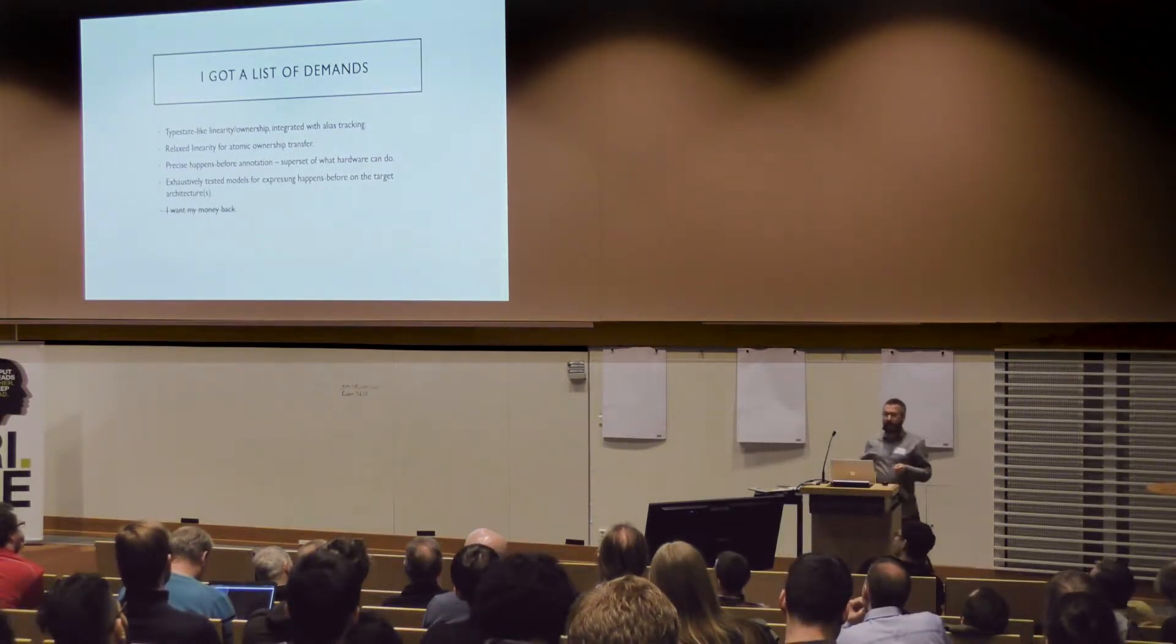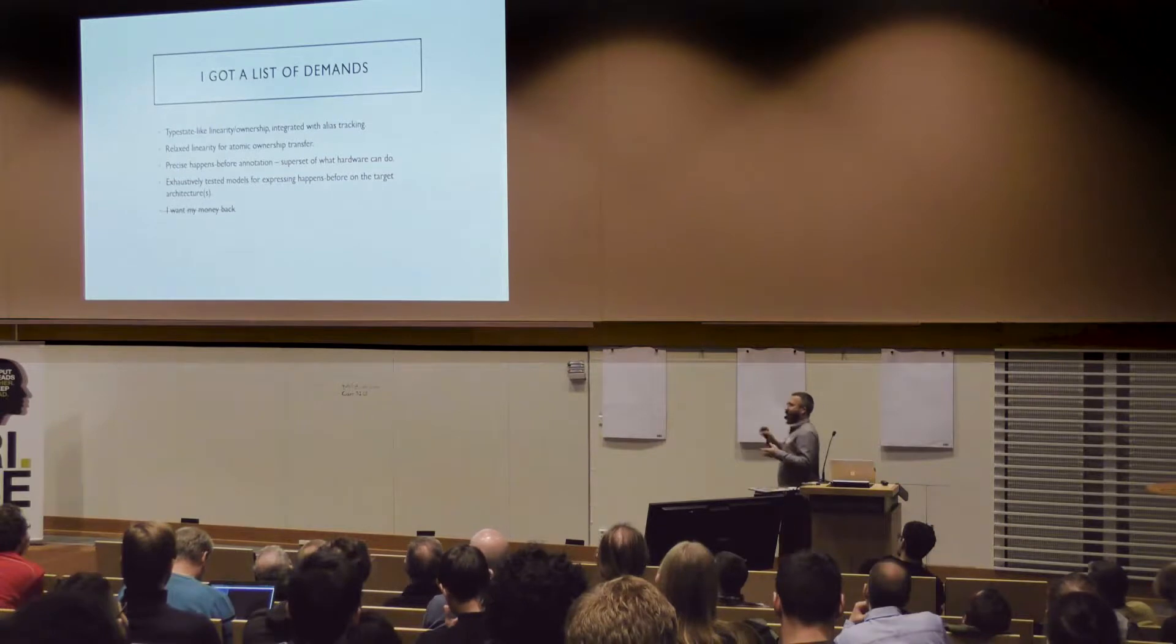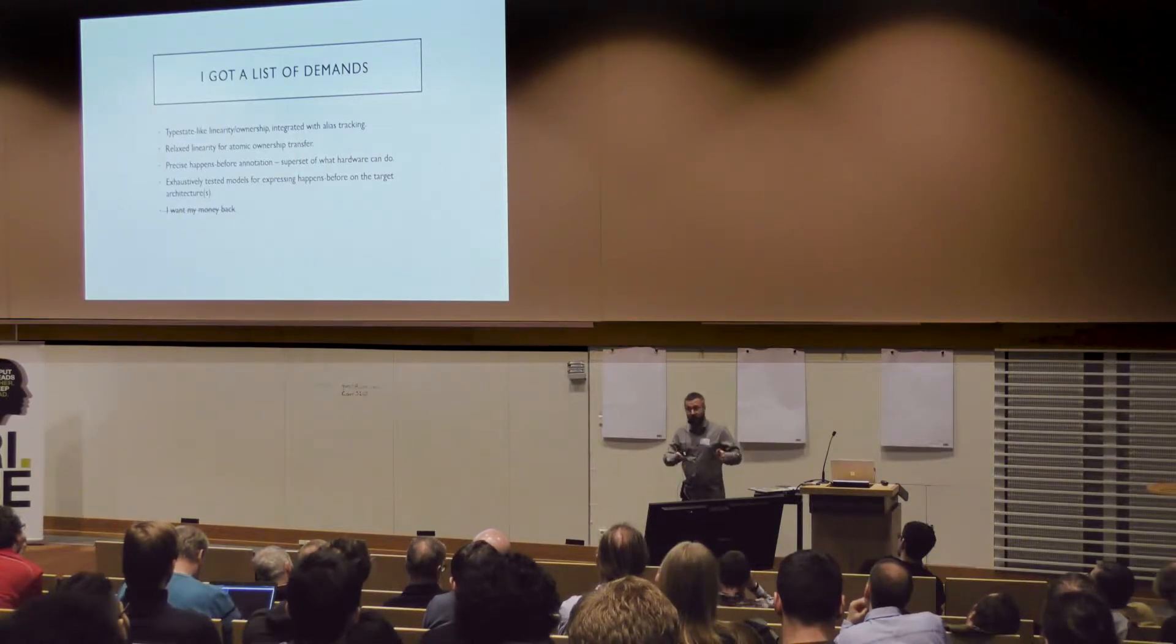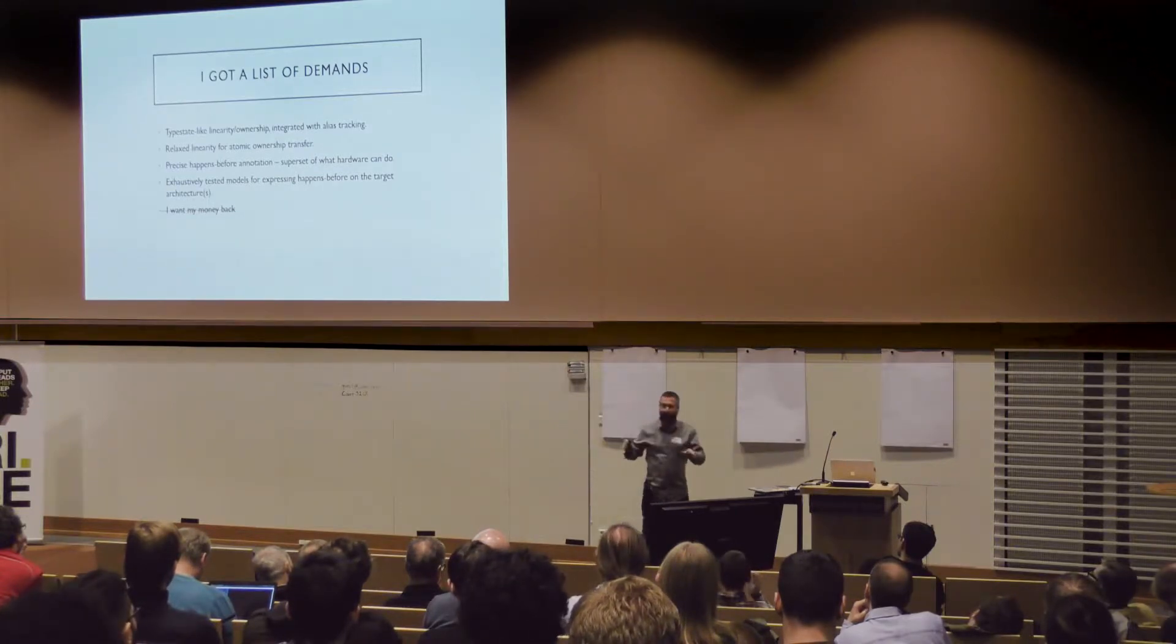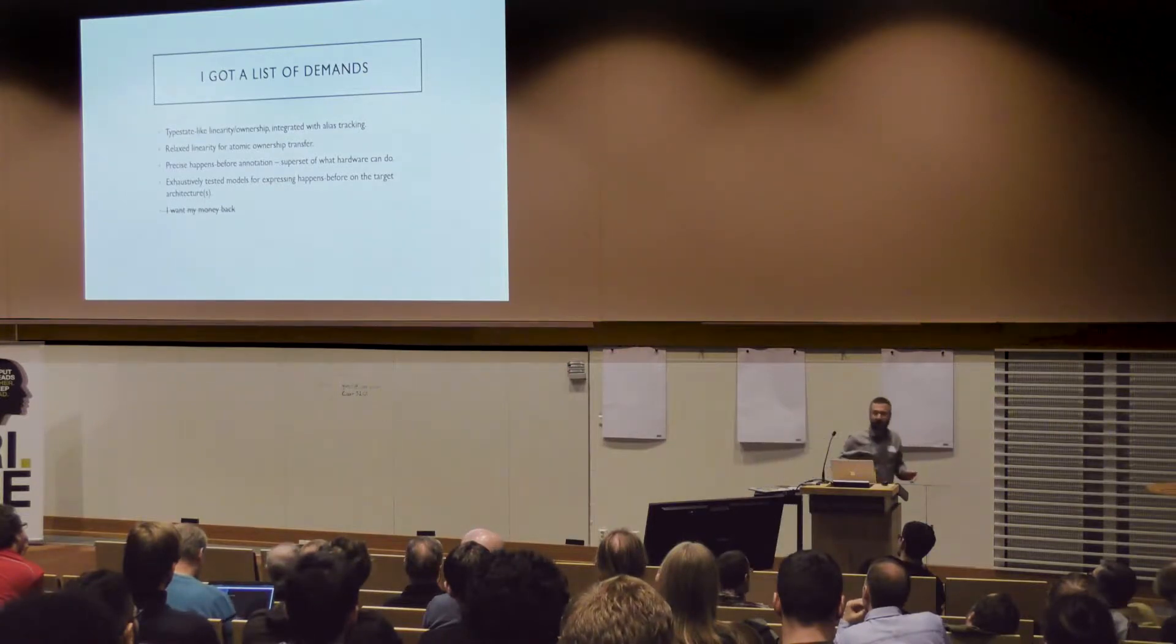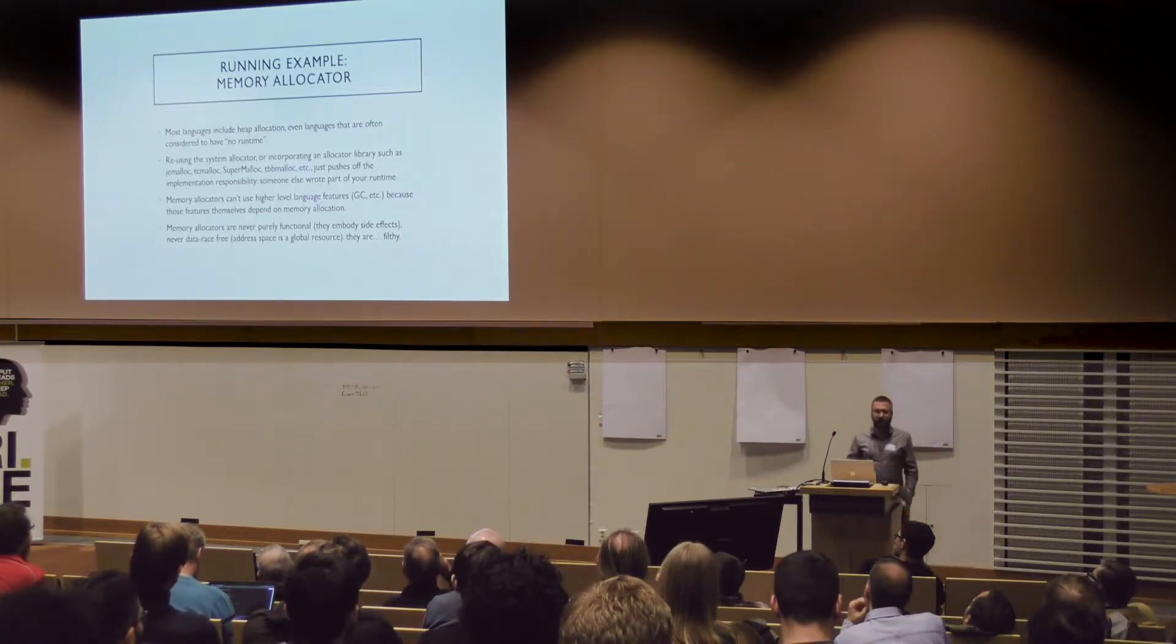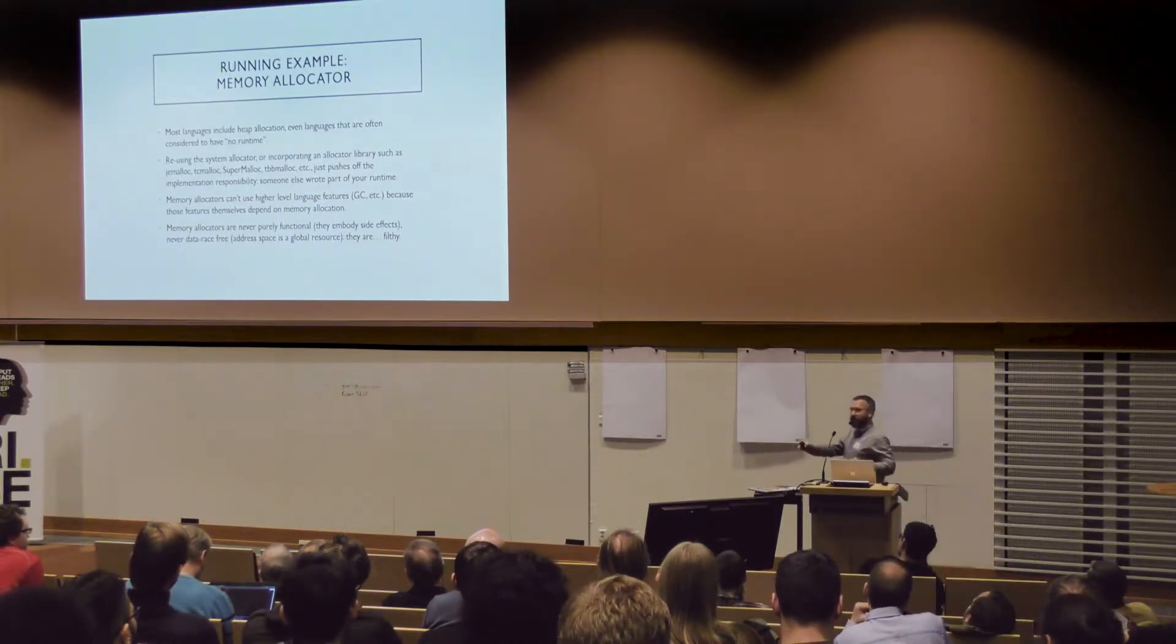And finally, we need some kind of exhaustively tested models. We want to be able to say, for any given target architecture, the happens before annotations that we're talking about can be most efficiently represented given some stream of instructions that depends on the target ISA. That mapping has to be independent from the compiler itself. Otherwise, you're back with anarchy trying to hand-tune implementations for any arbitrary target architecture.